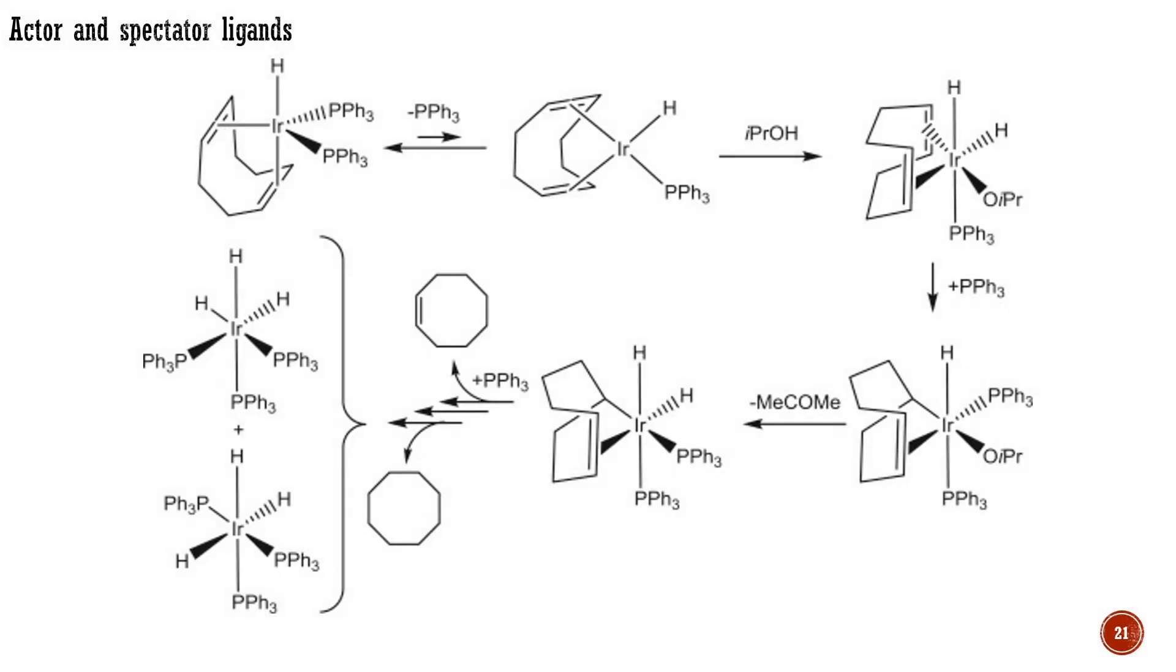Actor ligands may allow isolation of a stable material as a precursor to a reactive species only formed after departure of the actor, that species either being too reactive to isolate or not otherwise easily accessible. A classic example is chelating 1,5-cyclooctadiene that binds to rhodium-1 or iridium-1 hydrogenation catalysts. Under hydrogen gas, the cyclooctadiene is hydrogenated to free cyclooctane, liberating the active catalyst.